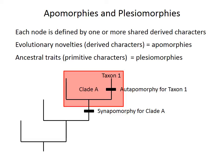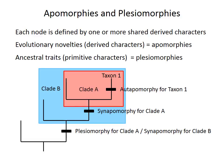Members of a clade like clade A can also have traits inherited from an ancestor of the clade — traits that are not new evolutionary novelties but were present long before. These are called plesiomorphies, or primitive ancestral characters. For example, clade B is a less inclusive group whose members share a synapomorphy — an evolutionary novelty that first appeared in the common ancestor of all taxa in clade B. However, that same trait is a plesiomorphy for clade A, because the two taxa in clade A inherited it from their earlier ancestor.